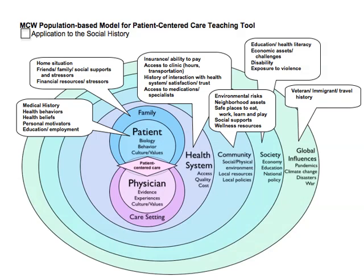One application of this model is to guide the taking and interpretation of a detailed social history. A patient's social history can be mapped to various aspects of the model. As outlined in this slide, one gains a more thorough understanding of the patient's health influences from their home situation, their ability to interact with the health system, neighborhood assets and risks, general education or literacy, as well as exposures to toxins, violence, and travel hazards. Understanding these influences and contexts for a patient can influence the care we provide.